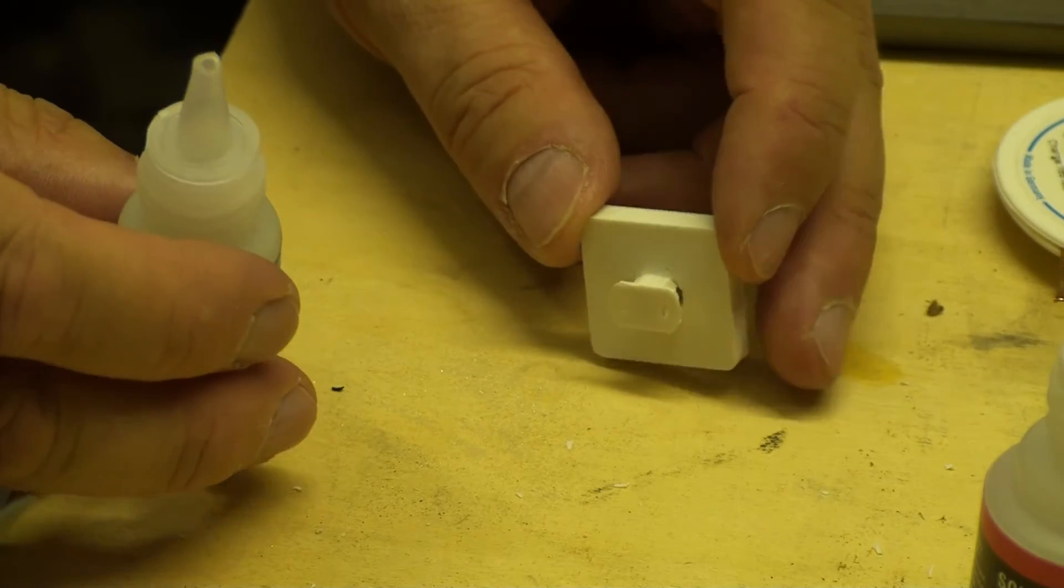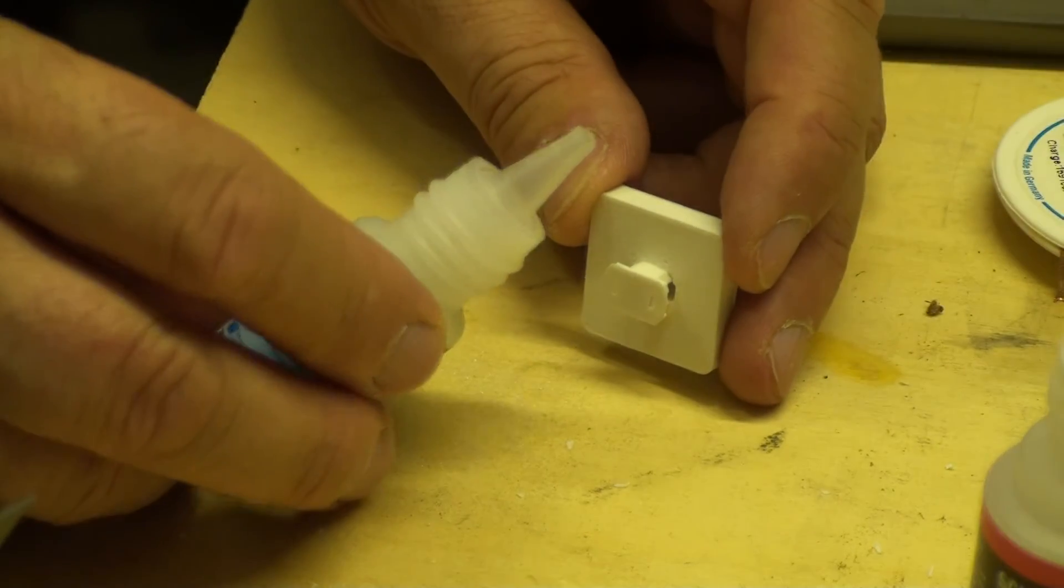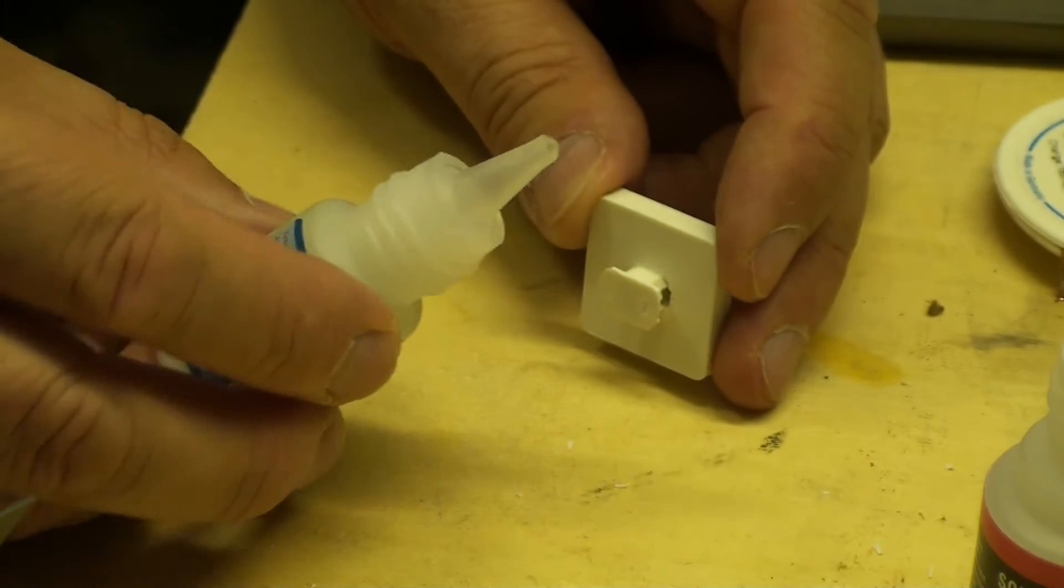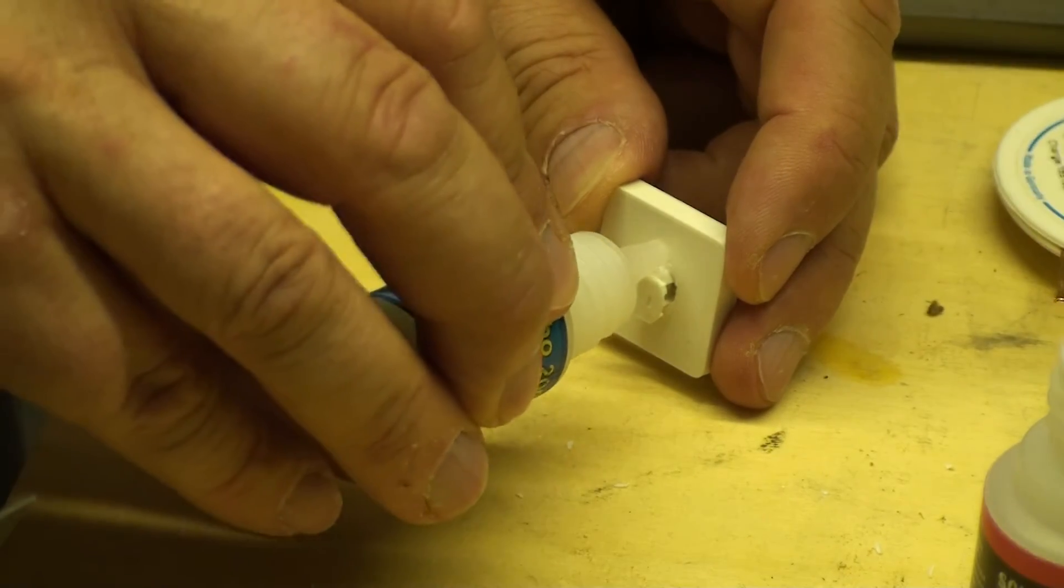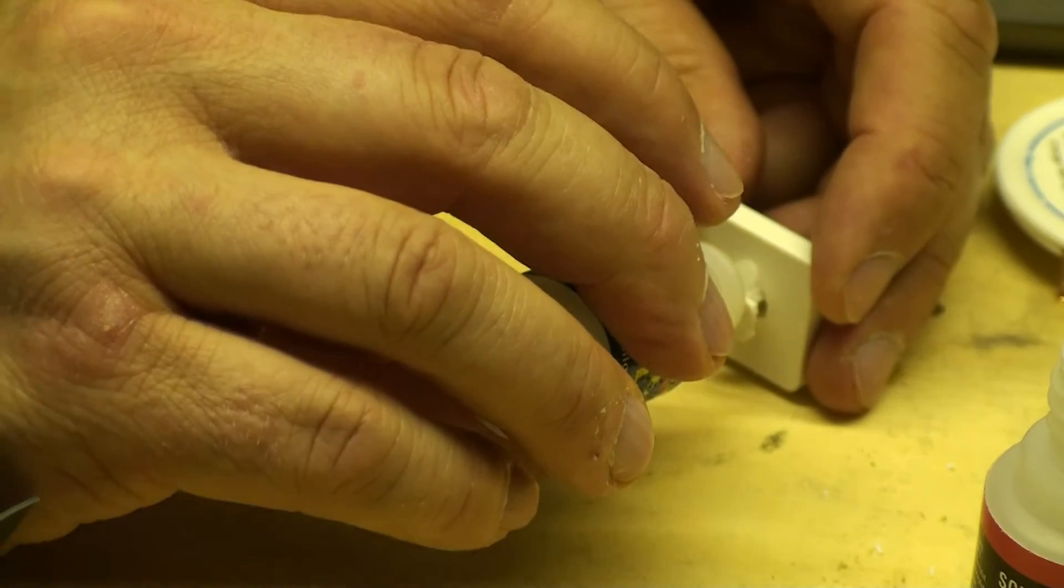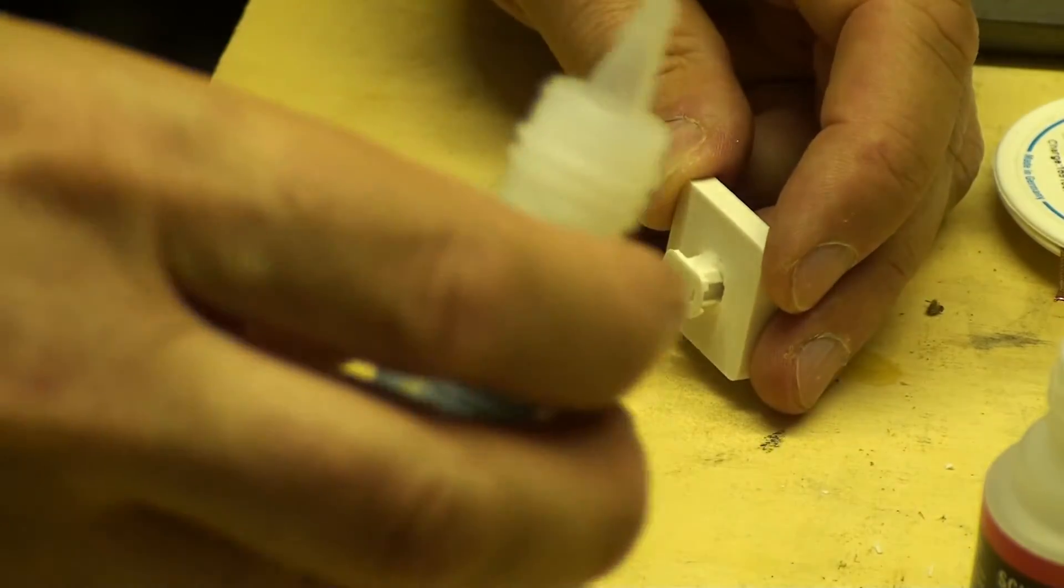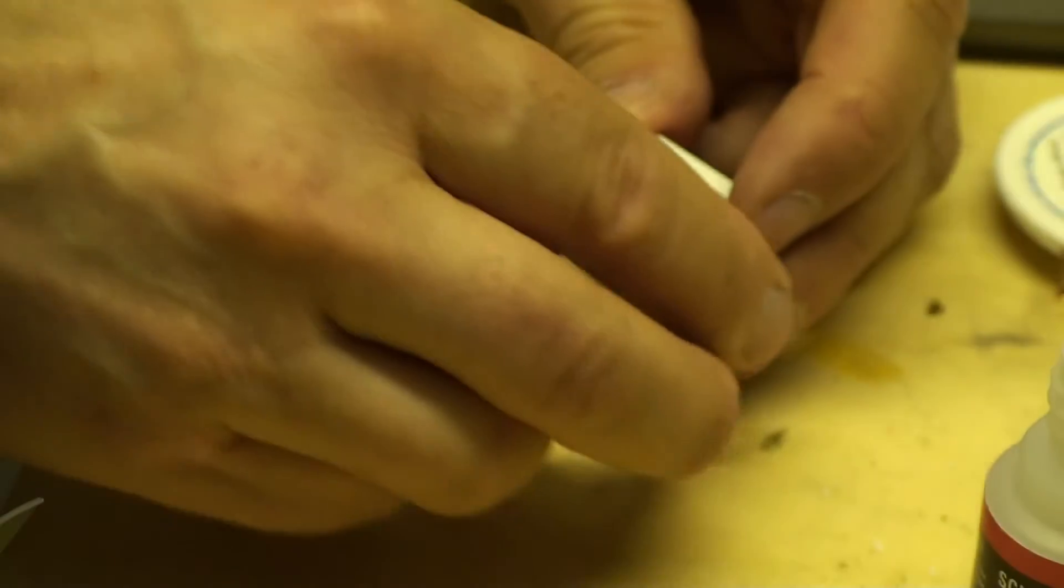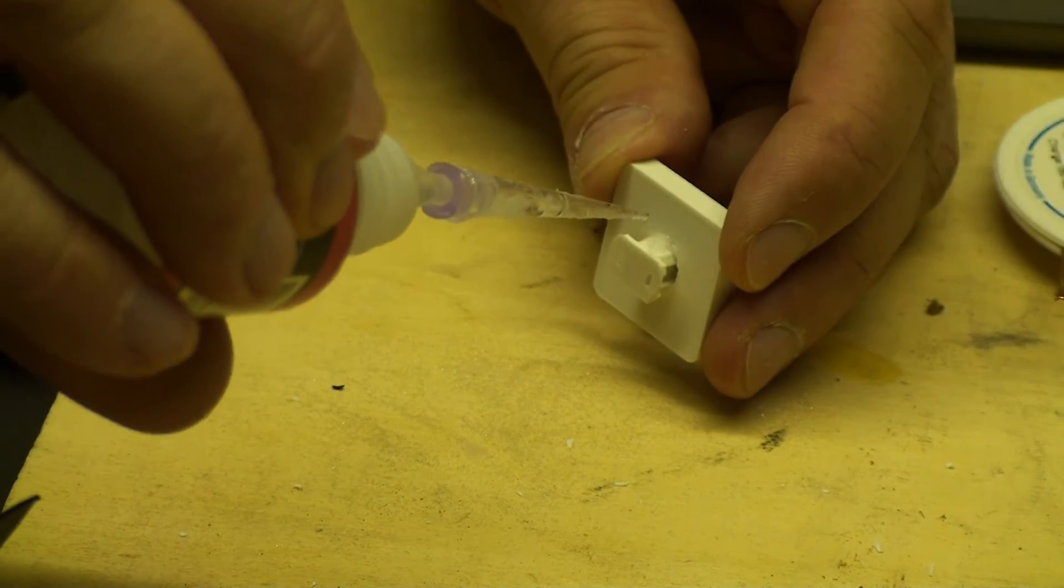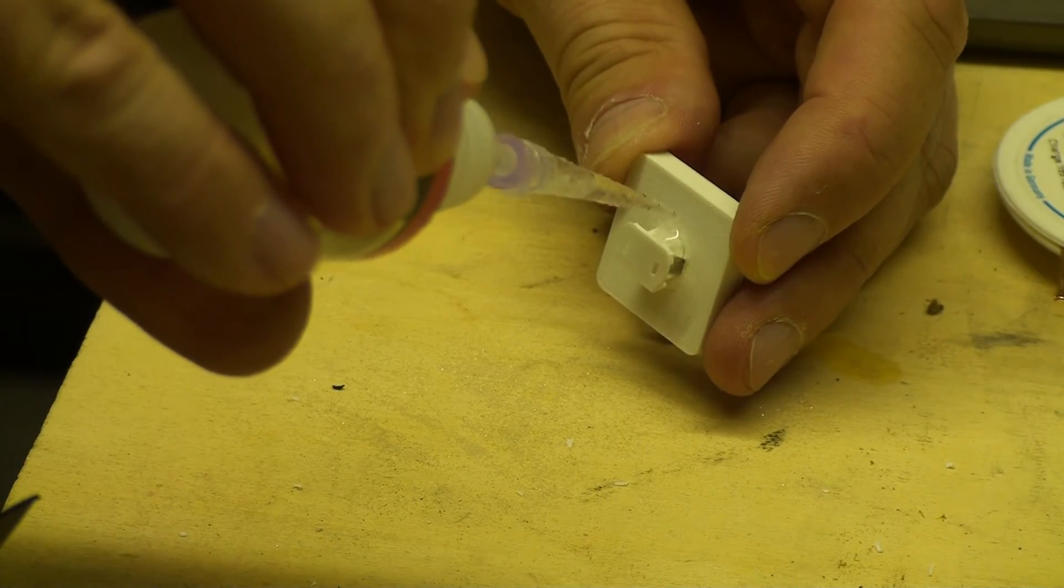To get some additional strength with the super glue, I use this super glue powder at the side of the connection. A little mess with this powder, it goes everywhere but where it's needed. Then just a drop of super glue, and done.